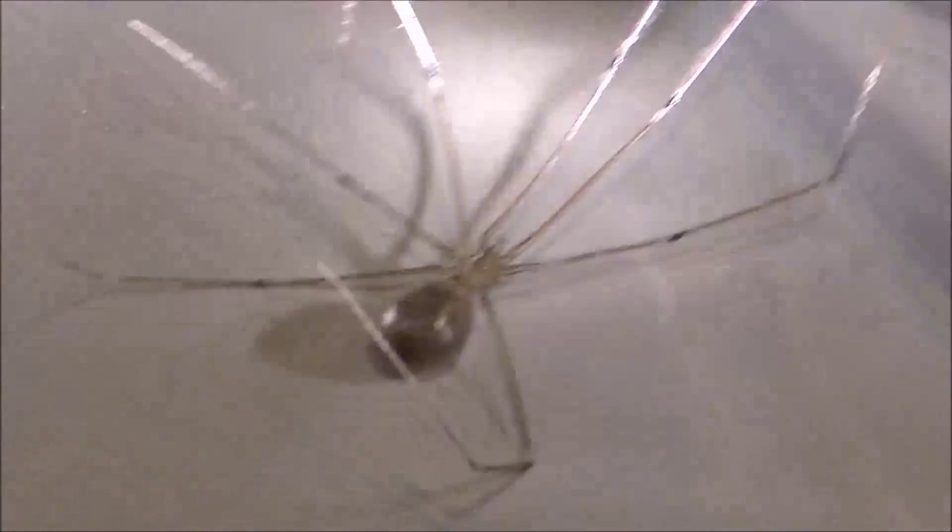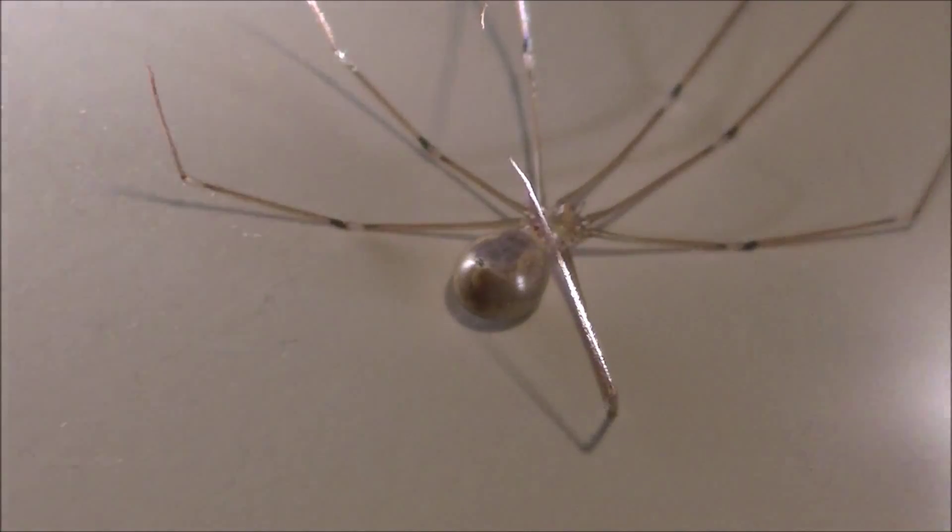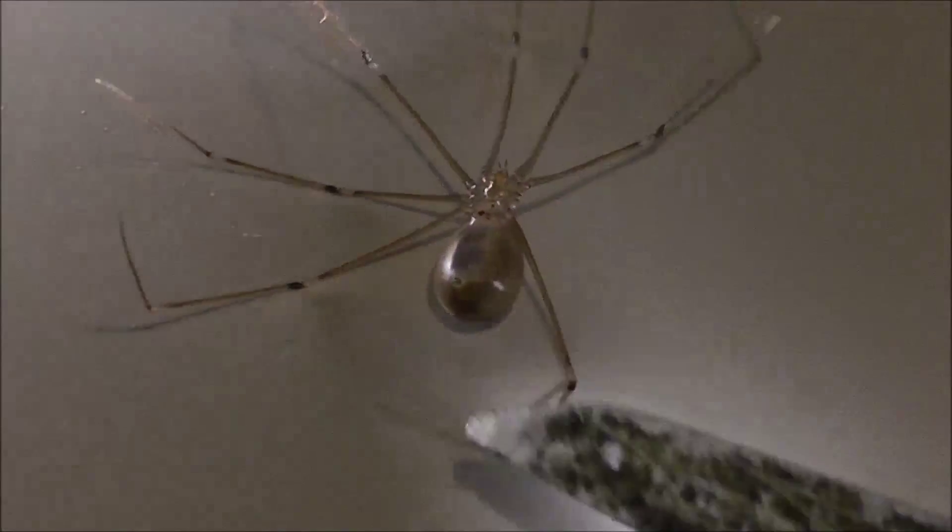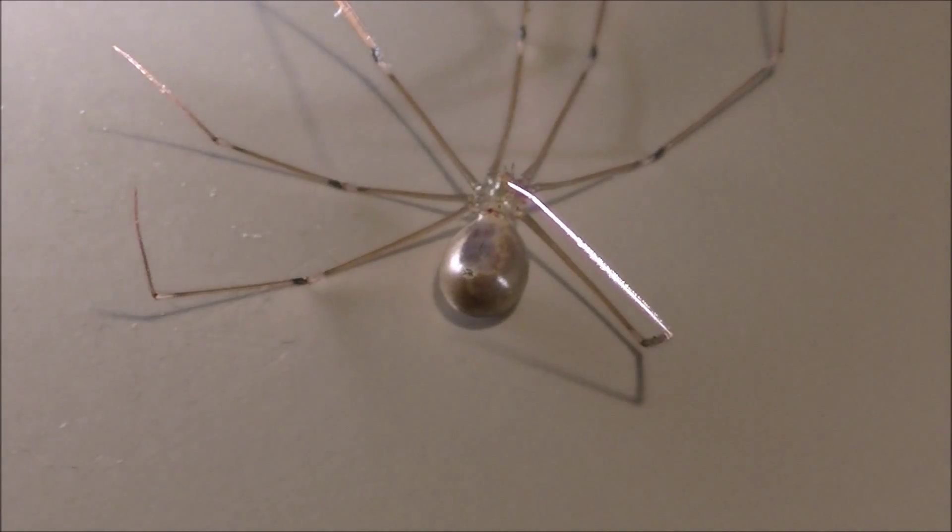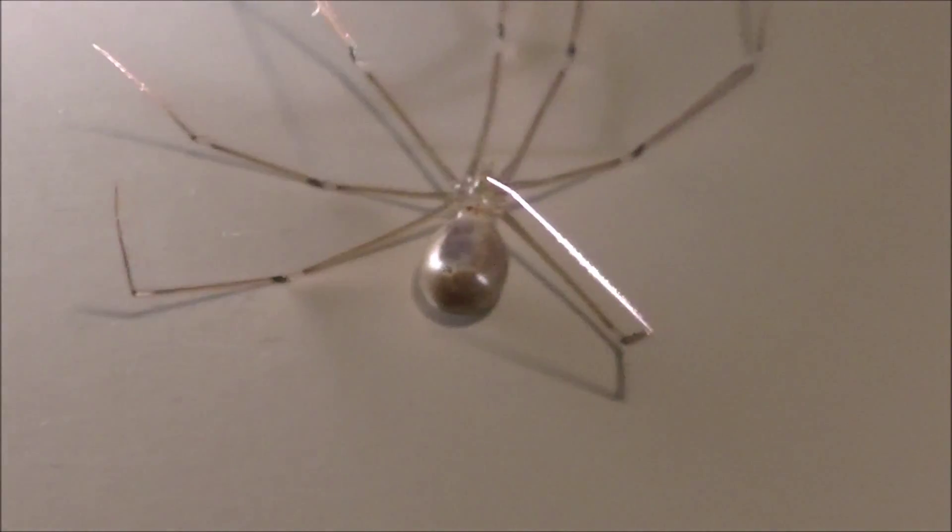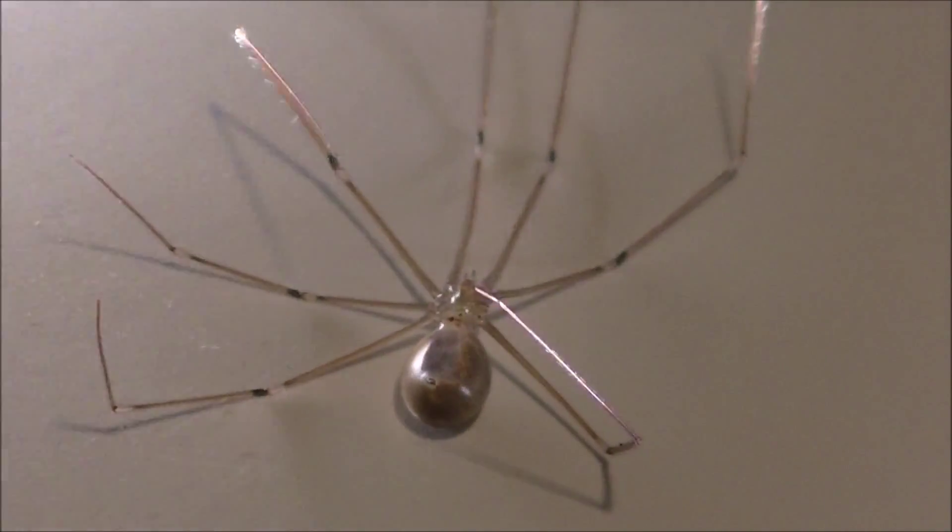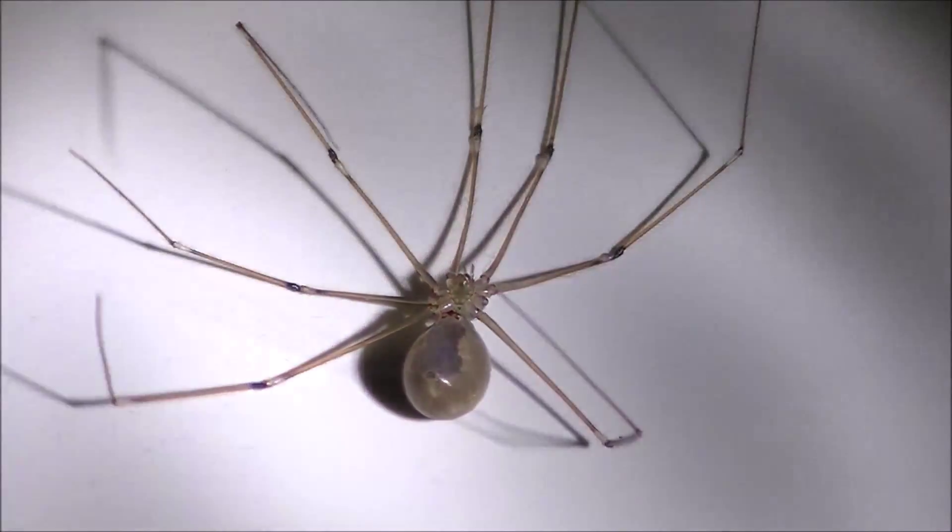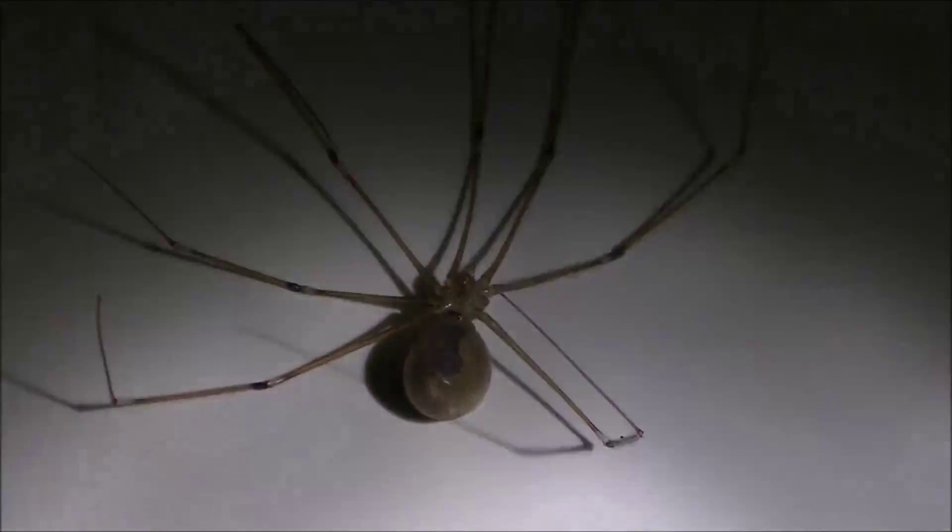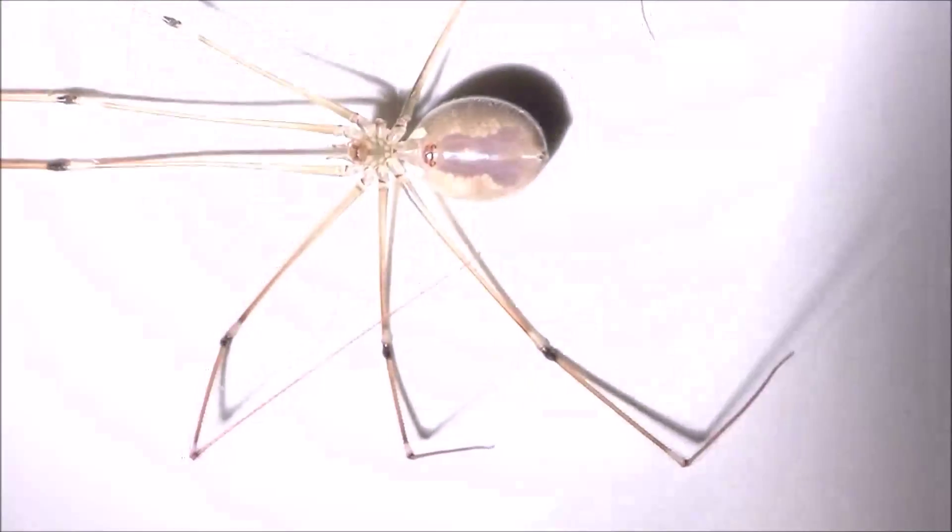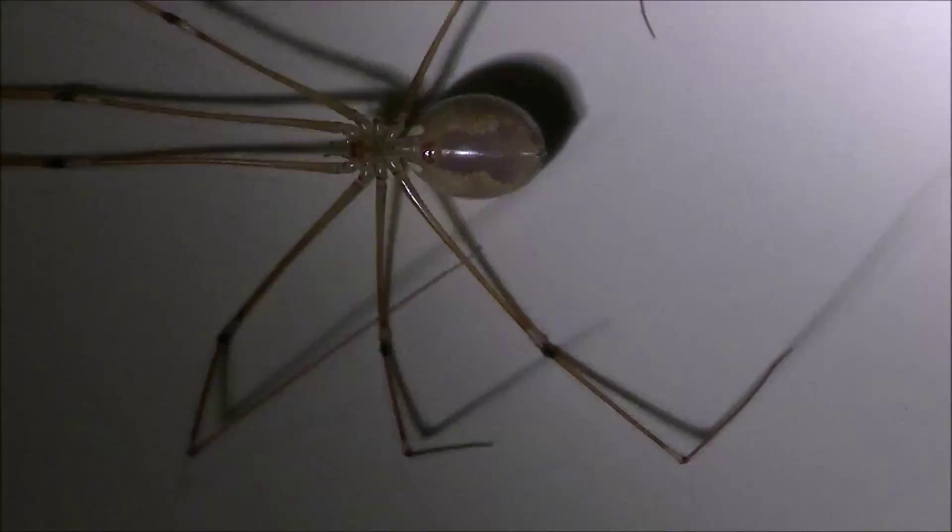But as you can see, once you start really looking at it, it's got reddish purple legs and the very distinctive marking on the belly that looks like a violin. That is definitely something you want to stay away from right there.